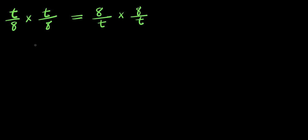Hello. How to solve this: we have t divided by 8 times t divided by 8 equals 8 divided by t times 8 divided by t. So we are solving for all values of t that satisfy this equation.